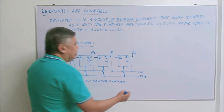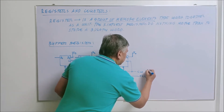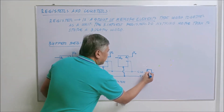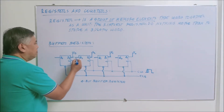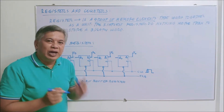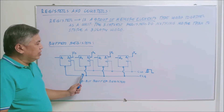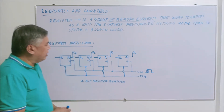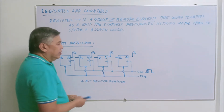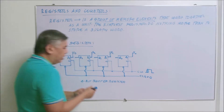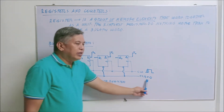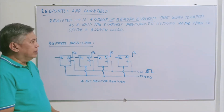Meaning, in your clock, if there is a positive edge triggering — for example, this positive triggering here — all of these flip-flops will receive the positive triggering at the same time. The same way with the clear input: because of the bubbles, if clear is equal to zero, automatically all the flip-flops here will receive clear equal to zero.